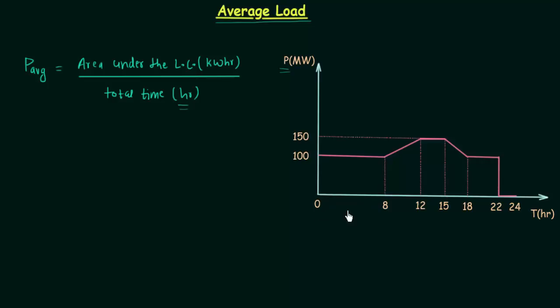You perform the integration from 0 to 8, then from 8 to 12, and so on until 24 hours. Once you have all the individual definite integrals, add them to get the area under the load curve. But we are not going to follow this process — it will be lengthy. Instead we will break down the area into simple shapes.